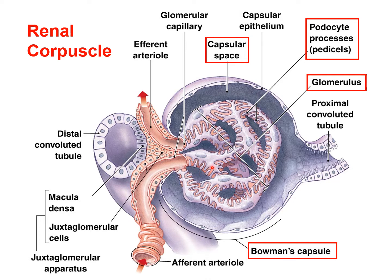The podocytes can actually regulate the size of those filtration slits, and that will affect how much plasma is being filtered out of the blood. The plasma filtered out from the glomerulus will then enter Bowman's capsule and start going down the proximal convoluted tubule.